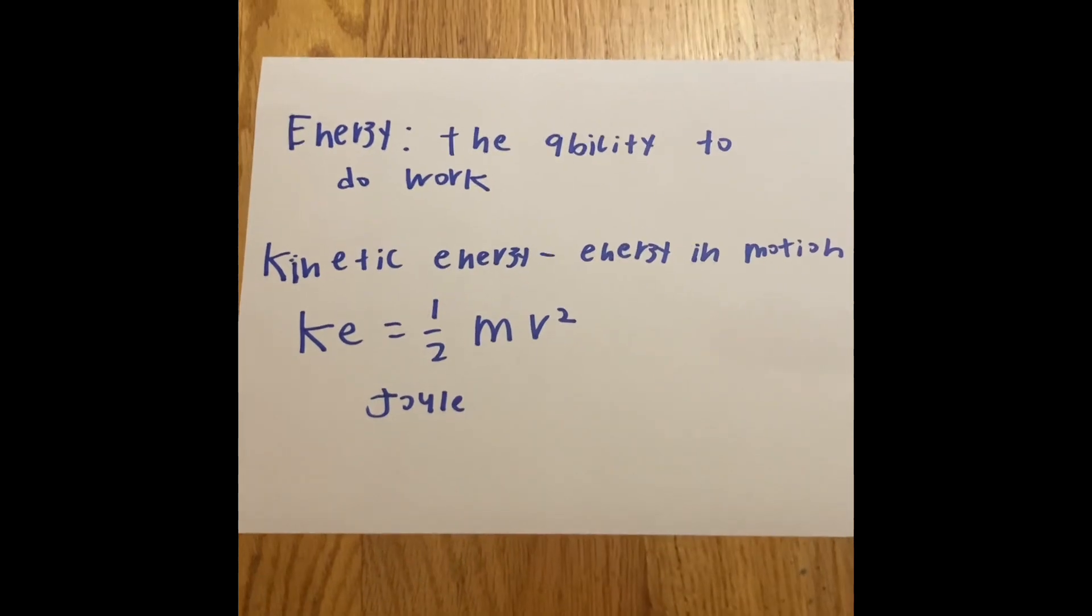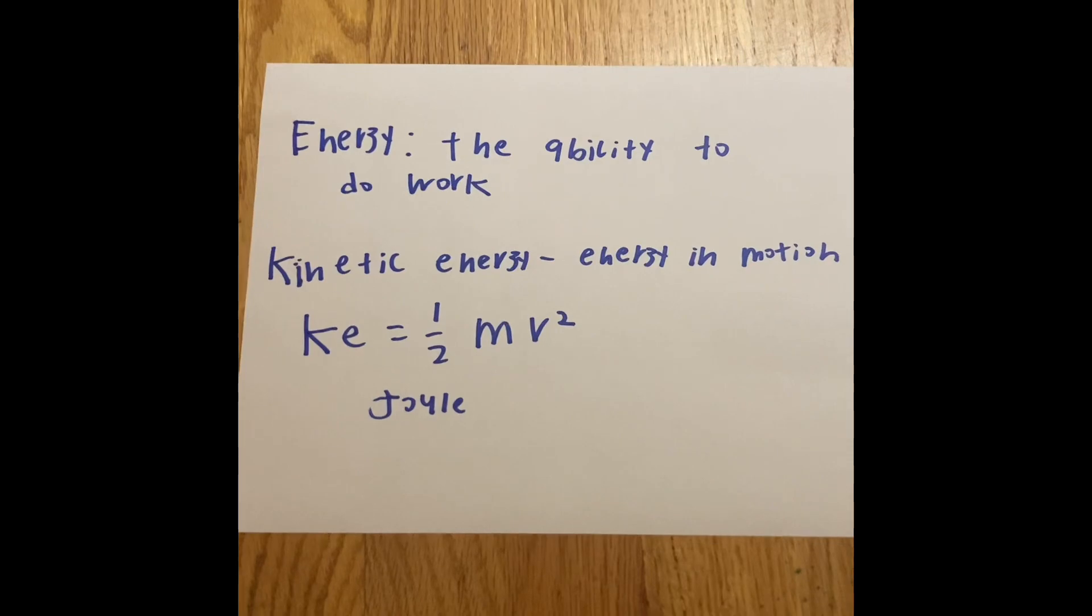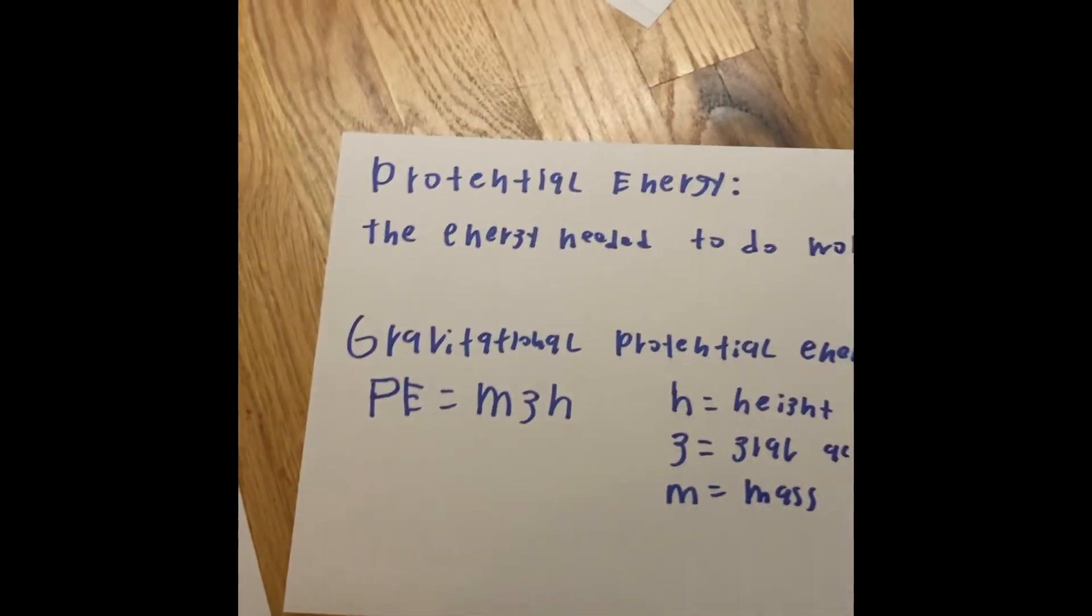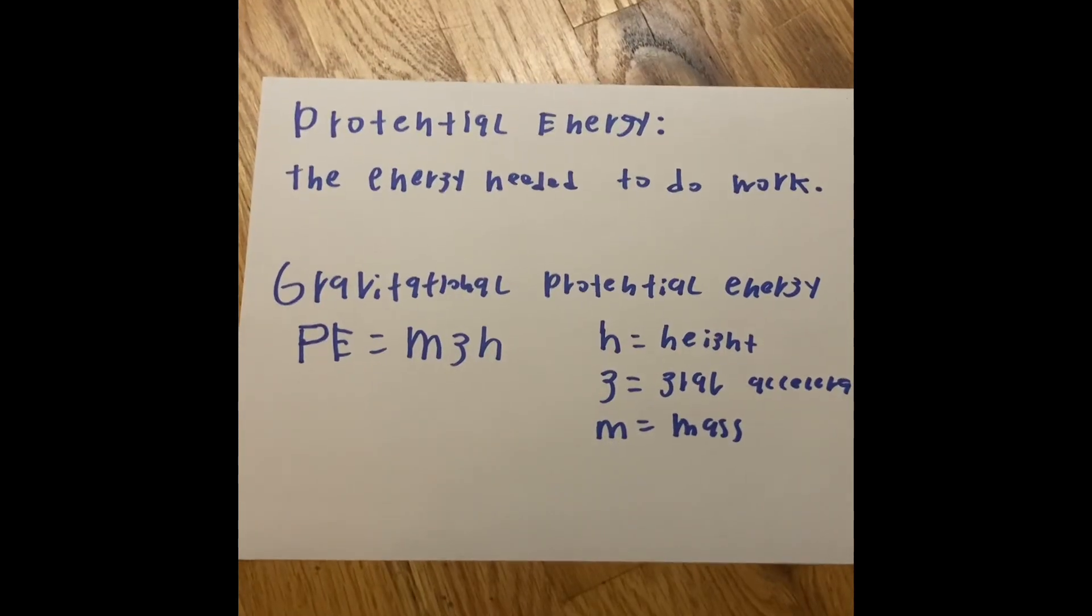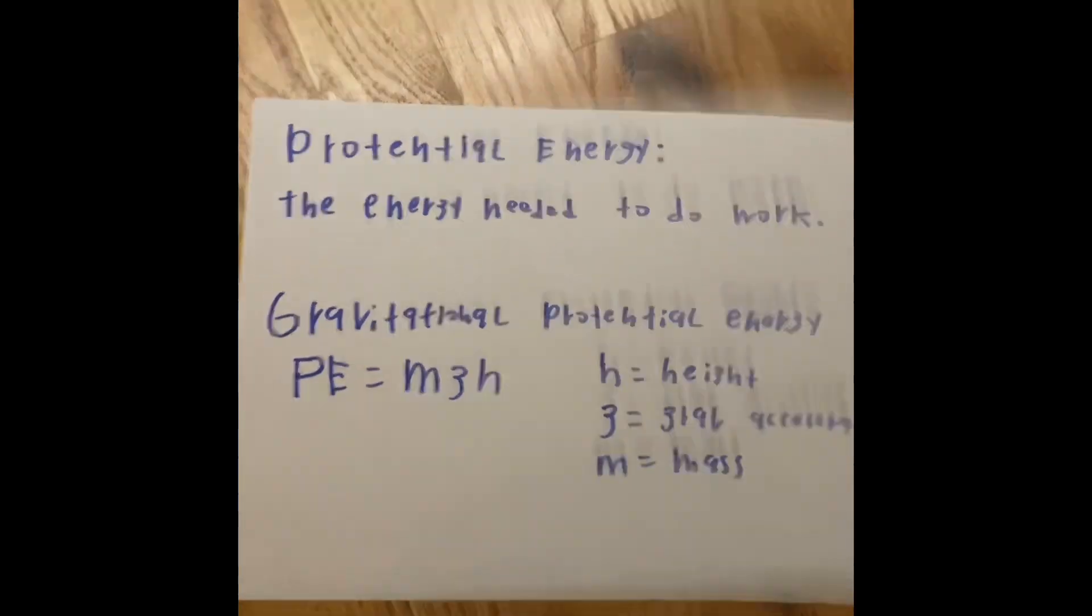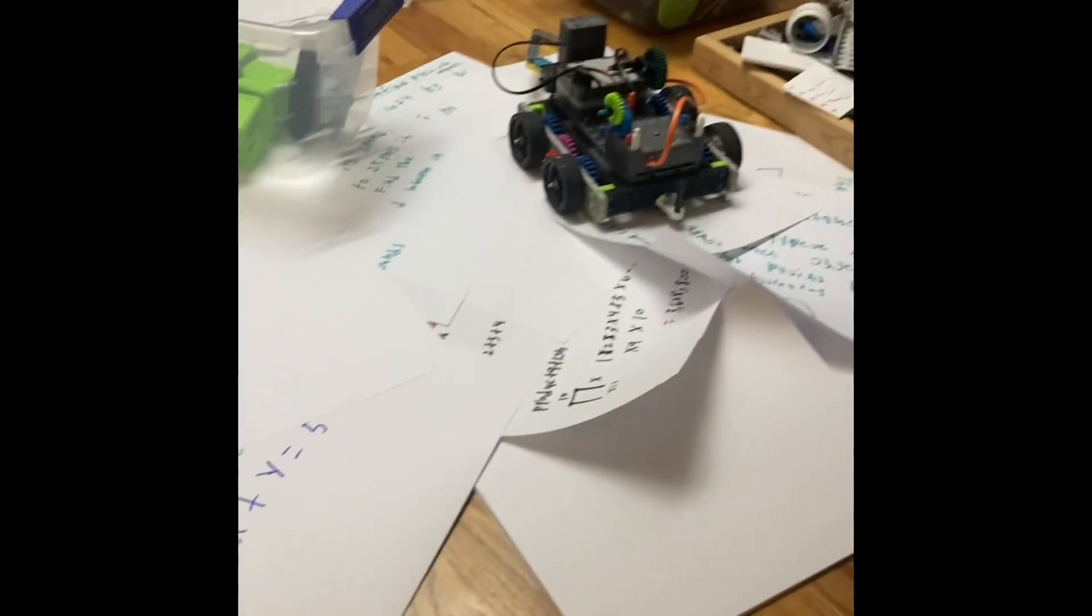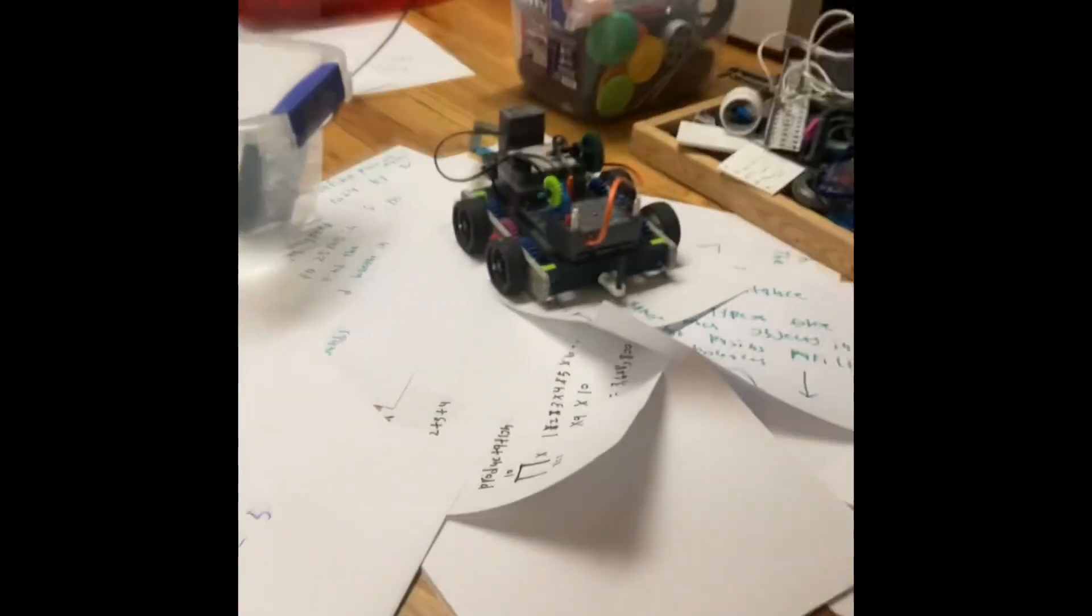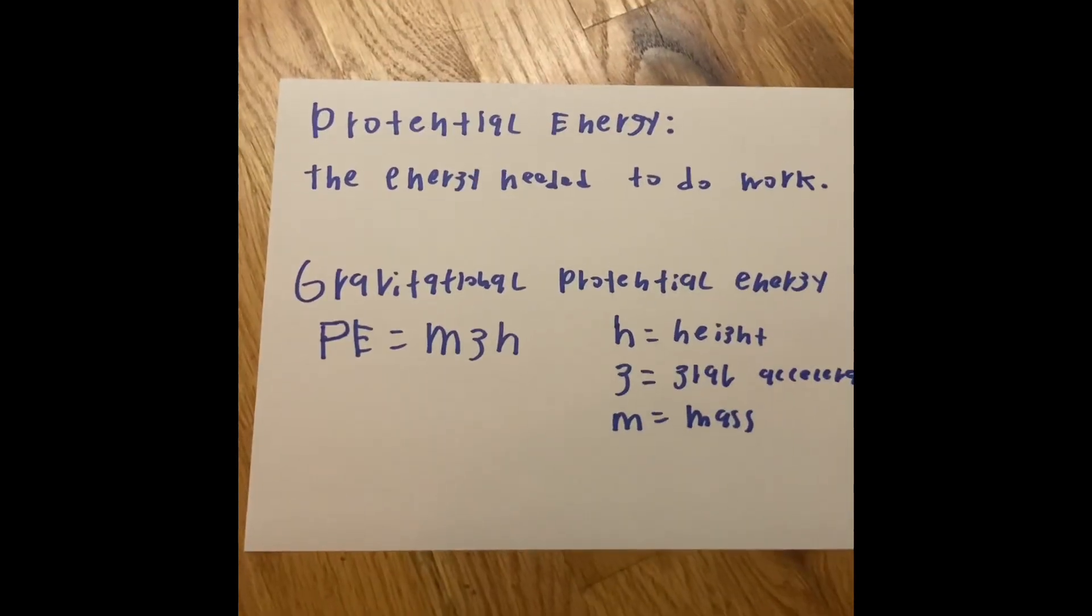Sometimes, when an object or someone needs to do some kind of work by using energy or consuming energy, sometimes the work cannot be done because there's just not enough energy. That is where we calculate the potential energy, the energy needed to do some kind of work to complete a task. If the robot is trying to haul something up a hill and it doesn't have enough energy, it's not able to complete that task. And that's why we have gravitational potential energy.